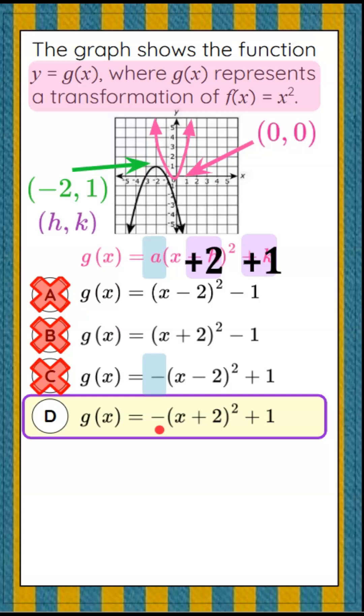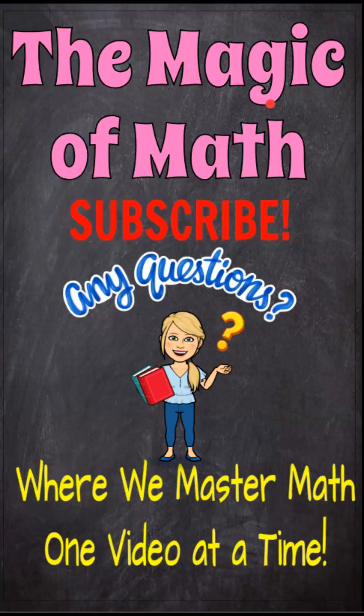g(x) = -(x + 2)² + 1, which is this function g, the transformation of our parent function f(x) = x². And that's the magic of math, where we master math, one video at a time.